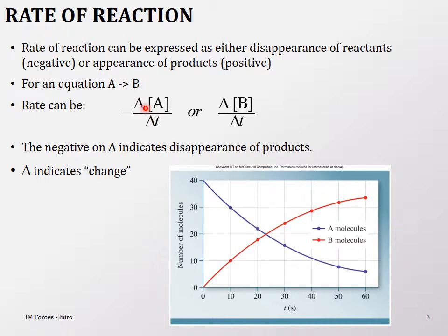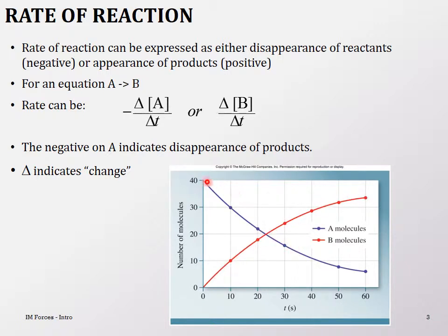There is the change of concentration over time. For A, which is the reactant, it's going to be negative because it's disappearing, and for B it's going to be positive because it's appearing. We can also measure B as the change of concentration of B over time. Looking at the graph of this, for B it should be increasing and for A it should be decreasing over time.